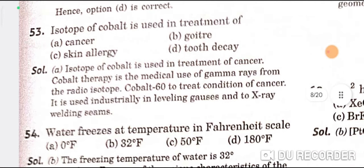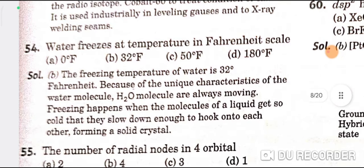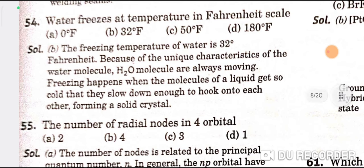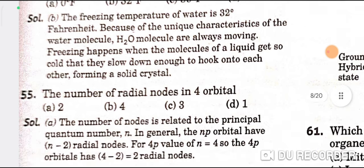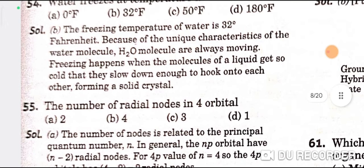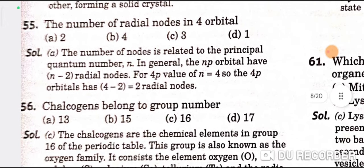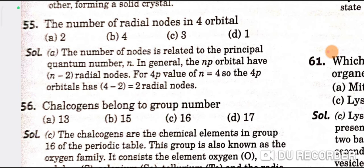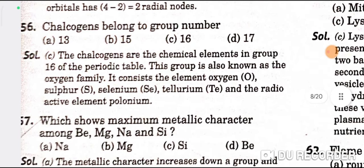An isotope of cobalt is used in the treatment of cancer — A is the correct option. Water freezes at 32 degrees Fahrenheit — B is the correct option. The number of radial nodes in a 4s orbital is 2 — A is the correct option. Chalcogens belong to group number 16 — C is the correct option.